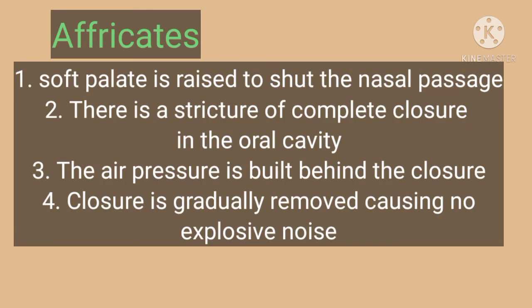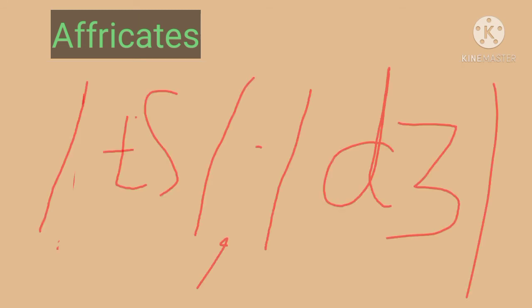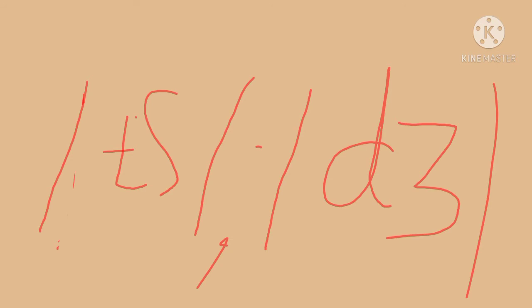Affricates are produced as the plosives are produced — that is, soft palate is raised to shut the nasal passage, there is a stricture of complete closure somewhere in the oral cavity. The air pressure is built behind the closure and the closure is gradually removed. As the closure is gradually removed, there is no explosive noise and there is no audible friction, so these sounds are called affricates. Ch and J are the examples of affricates in English. Ch is voiceless post-alveolar affricate and J is voiced post-alveolar affricate.